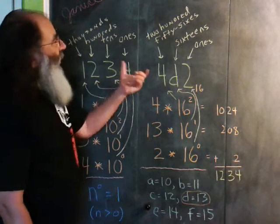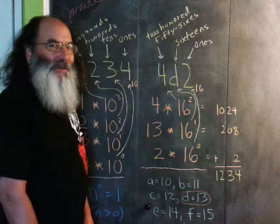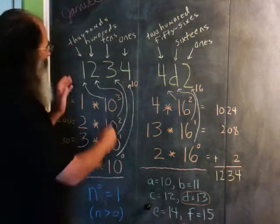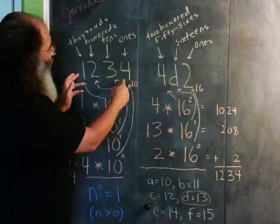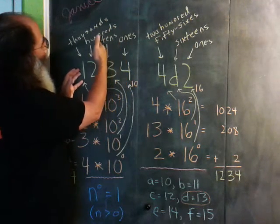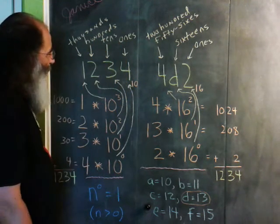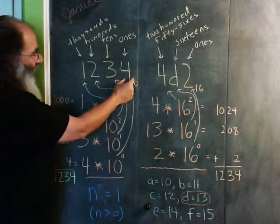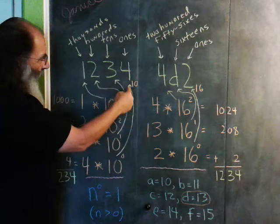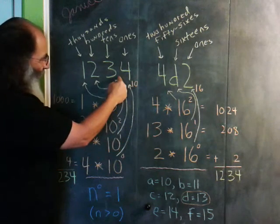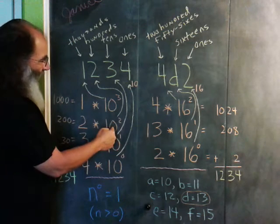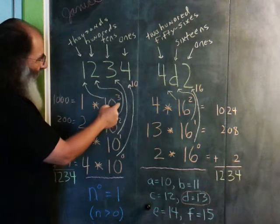But I thought I'd go ahead and do a number system clip. 1,234: ones, tens, hundreds, thousands. This place is 10 to the zero, which are the ones. This is 10 to the first, the tens. 10 squared, hundreds. 10 cubed, thousands.